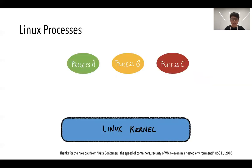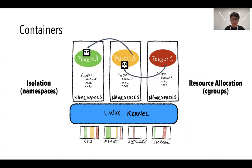Let's recap the history of Kata containers. At the very beginning, all Linux processes were running directly on top of the same Linux kernel, so if one process was attacked by a malicious process, it could use the same way to attack all processes running on the same host. This is because all processes had no isolation between each other. To tackle these problems, containers imported namespaces and cgroups to provide isolation and limitations of resource allocation, so that one process running inside a container cannot be easily attacked by processes running in other containers.